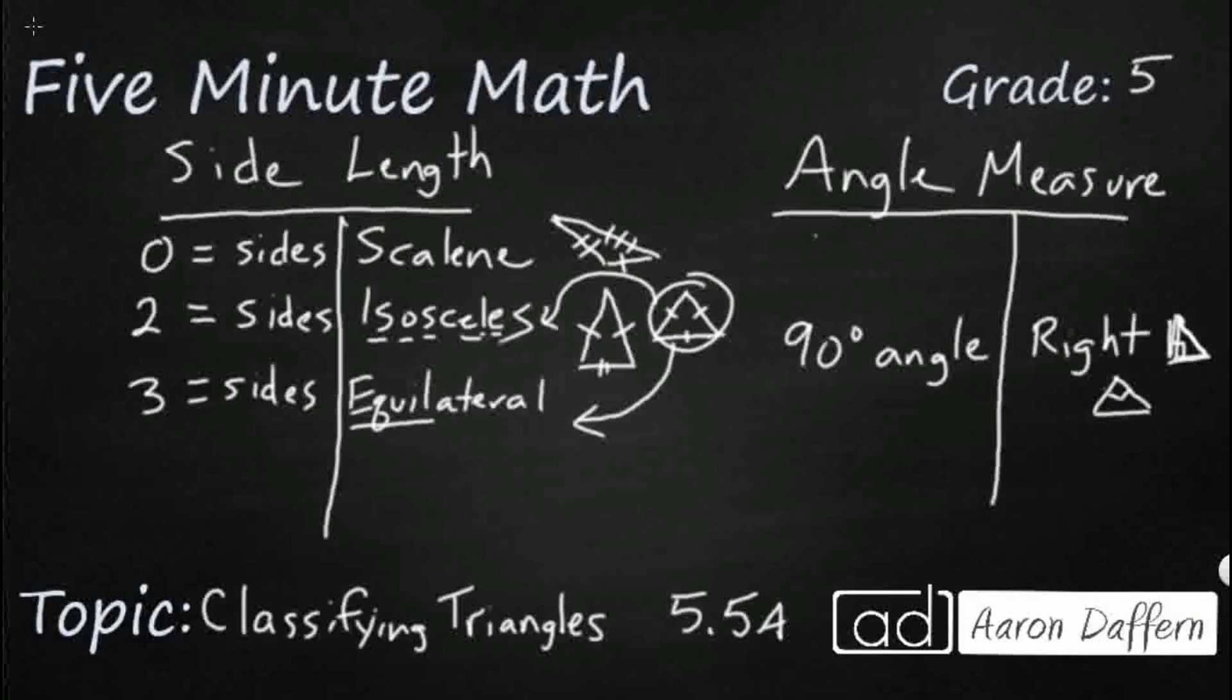So when we have a triangle that is less than 90 degrees and you have all three, so all three angles are less than 90, that is going to be what we call an acute triangle. An acute triangle might look like this, that isosceles one that I drew over there. I can bring that over because all three of these little angles right here are less than a square corner.